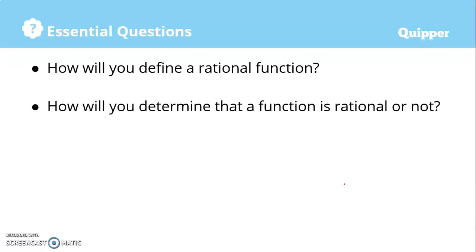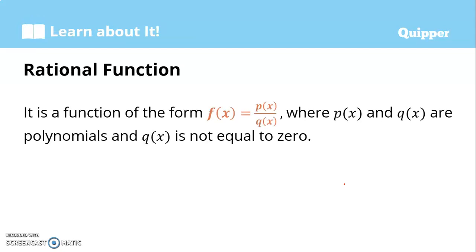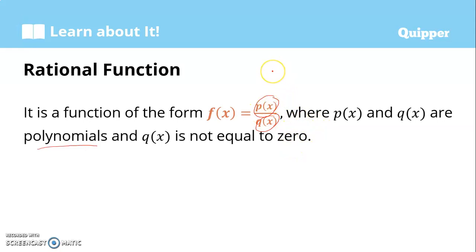Our main focus in this video would be defining a rational function and determining whether a function is rational or not. A rational function is a function of the form f(x) = p(x) / q(x), where p(x) and q(x) are both polynomials and the denominator q(x) should not be equal to zero. A function is rational only if both of these two conditions are met: the numerator and the denominator must both be polynomials.